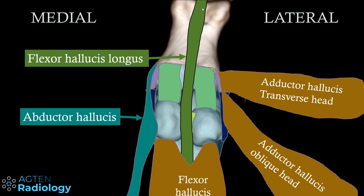The flexor hallucis longus tendon runs down here, and we have the flexor hallucis brevis with its two insertions on the corresponding sesamoid bones. On the medial aspect, the abductor hallucis blends in with all the structures, especially at the medial base of the proximal phalanx, with some fibers also going to the joint capsule and sesamoids. On the lateral aspect, the adductor hallucis muscles — with the transverse head and oblique head — are present, though I won't cover these muscular structures in detail today, as the focus is on the ligamentous structures.